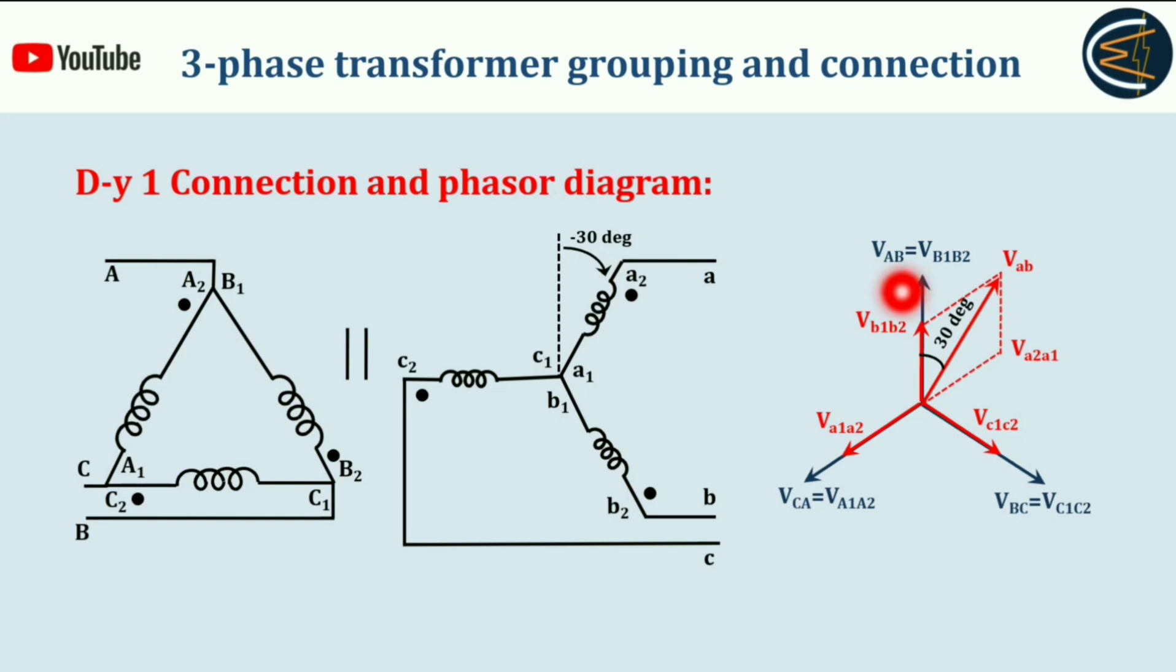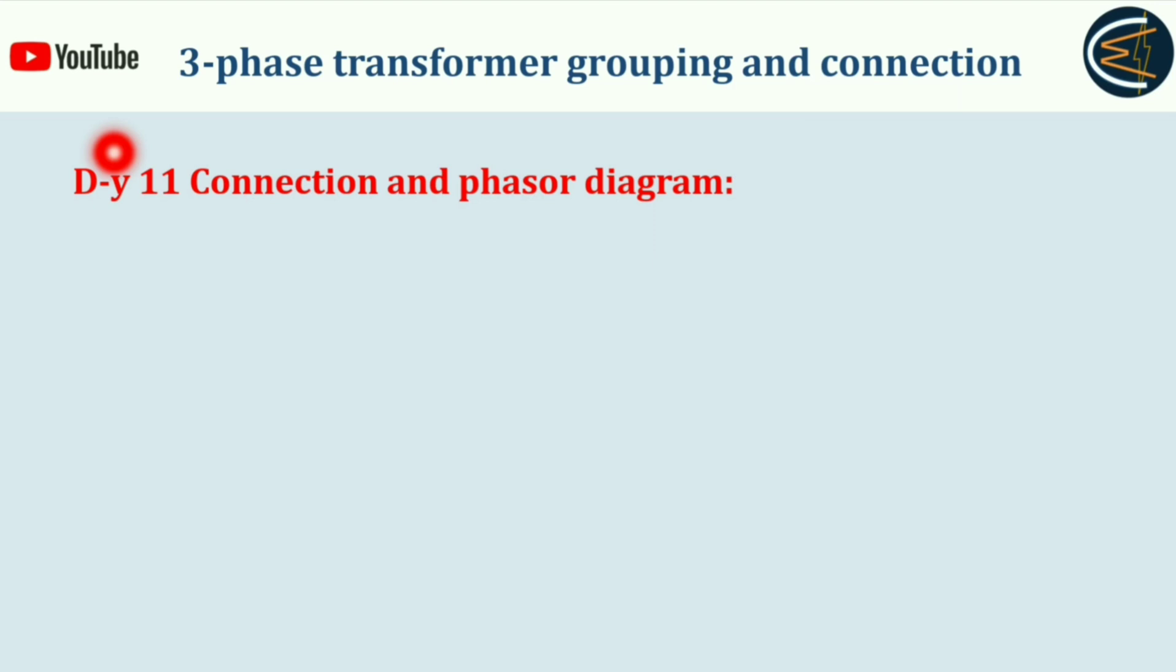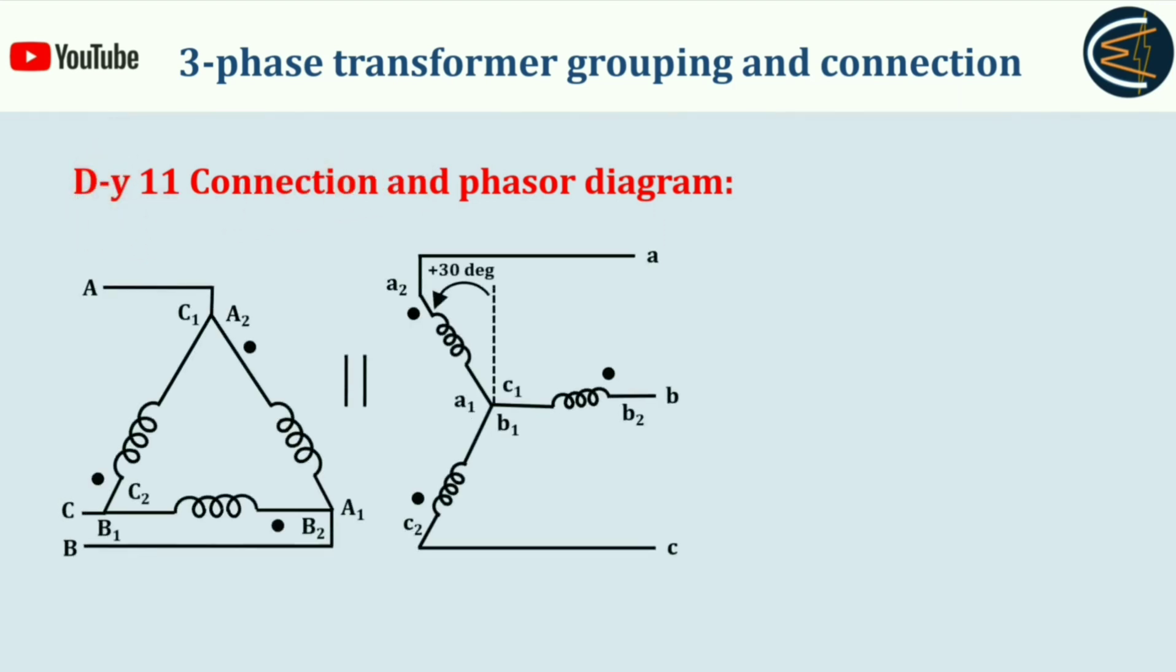capital AB. Hence proved, it is DY1 connection. Let's see the DY11 connection and phasor diagram. Here the primary